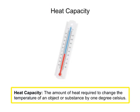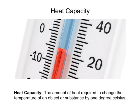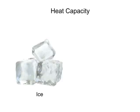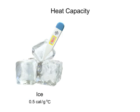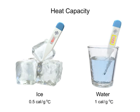Heat capacity is the amount of heat required to change the temperature of an object or substance by 1 degree Celsius. The heat capacity of water varies depending on its phase. As solid ice, the heat capacity of water is 0.5 calories per gram for every 1 degree Celsius, which means it takes half a calorie to raise the temperature of 1 gram of ice 1 degree Celsius. As a liquid, water's heat capacity is 1 calorie per gram for every 1 degree Celsius, so it takes 1 calorie of heat energy to raise 1 gram of water 1 degree Celsius.